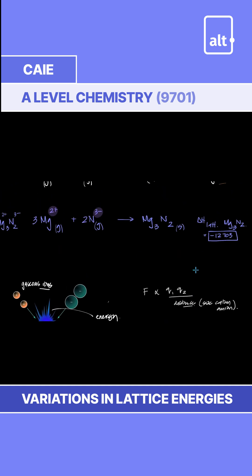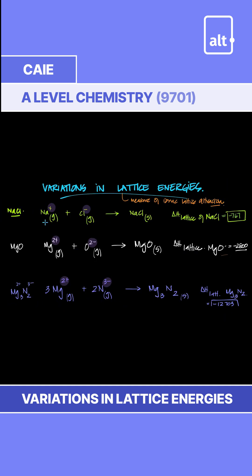For example, think about this: here, the charges are 1+ and 1-. But in the second one, the charges are 2+ and 2-. So this is double and this is double. The cation is double and the anion is double, which means the lattice energy is approximately 4 times greater.